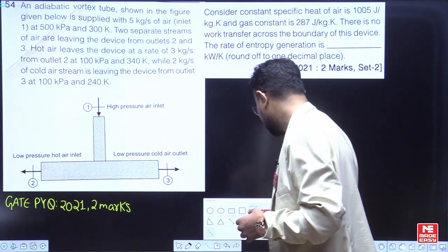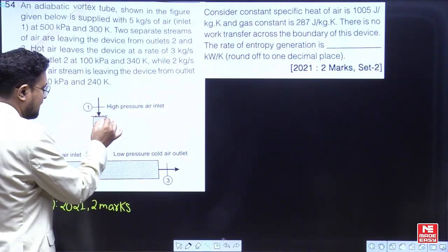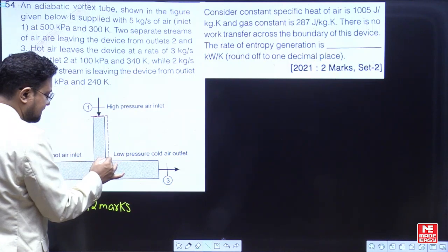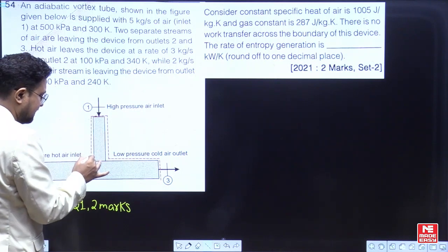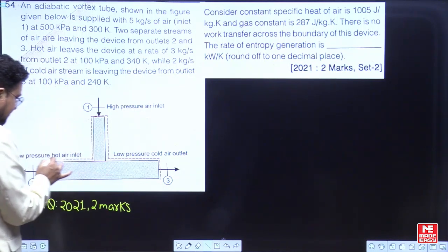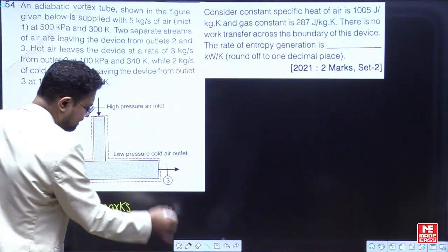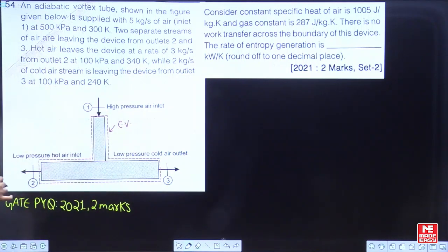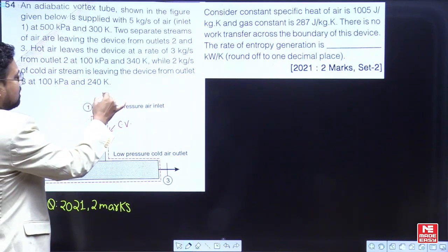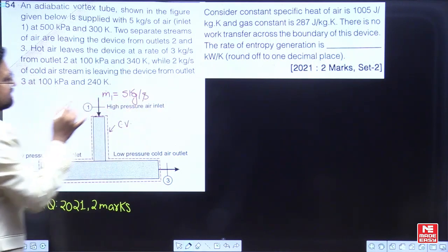There is a supply of 5 kg per second of air. I am using a dashed line to specify my control volume — whatever is inside this will be my area of interest. The entry condition is given as condition 1, so m-dot-1 is 5 kg per second. This mass is entering inside; this is the entry air.